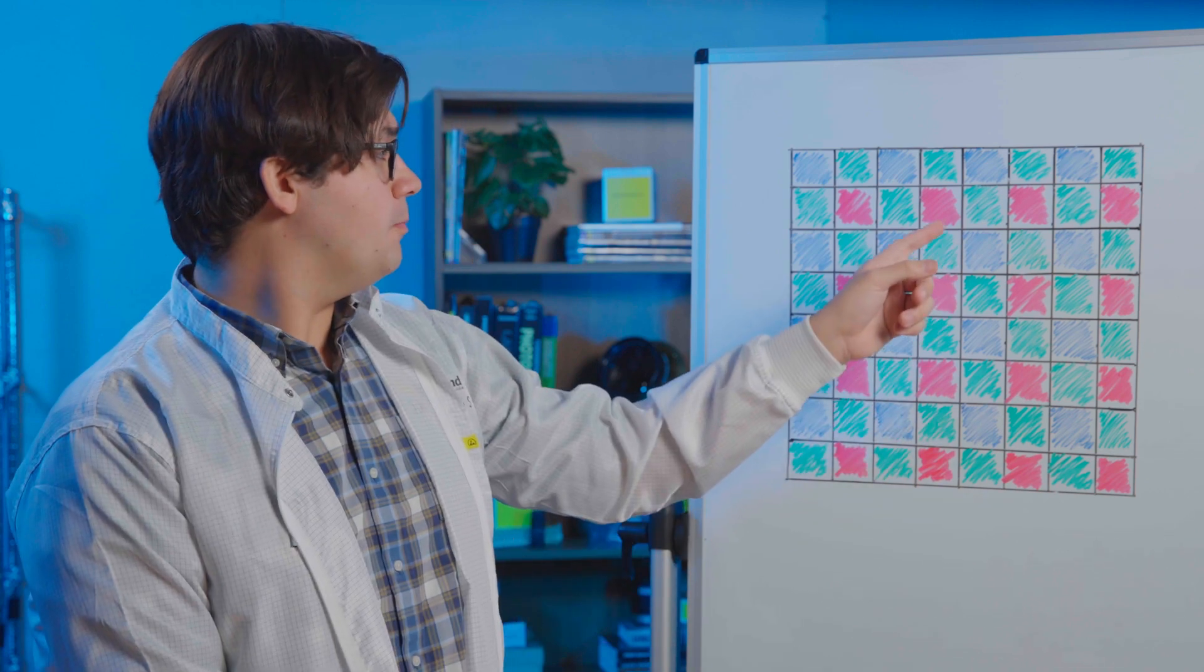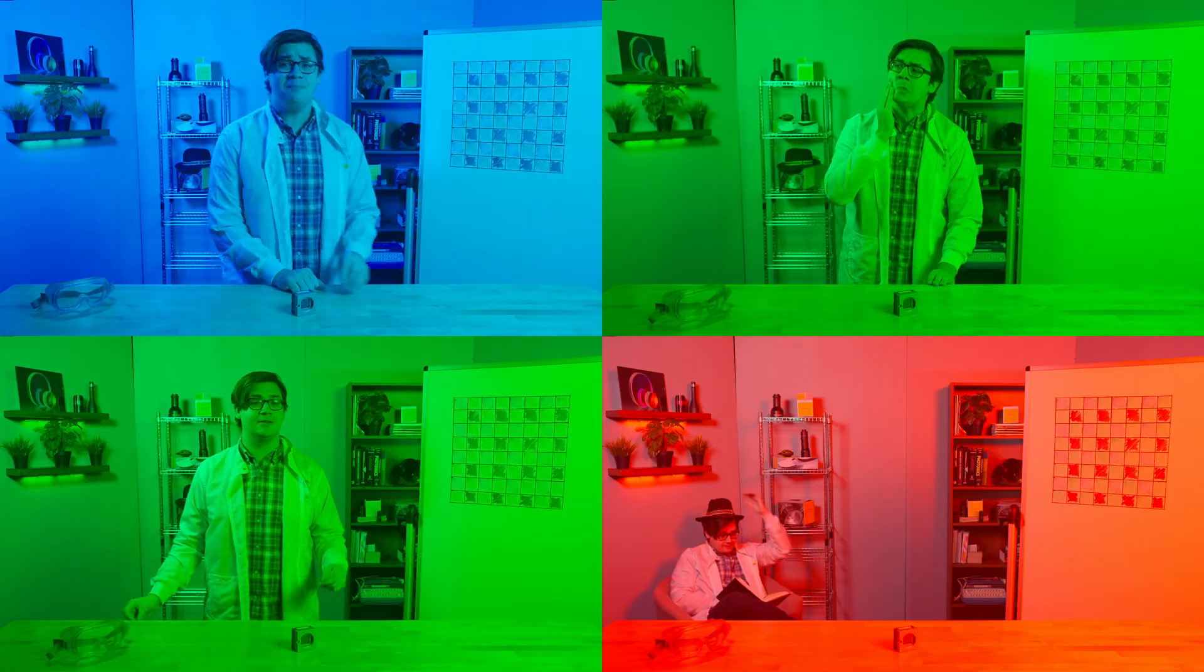These thousands and thousands of tiny little pixels are grouped into quadrants of blue-green, green-red. This pattern is repeated across the entire face of the sensor.